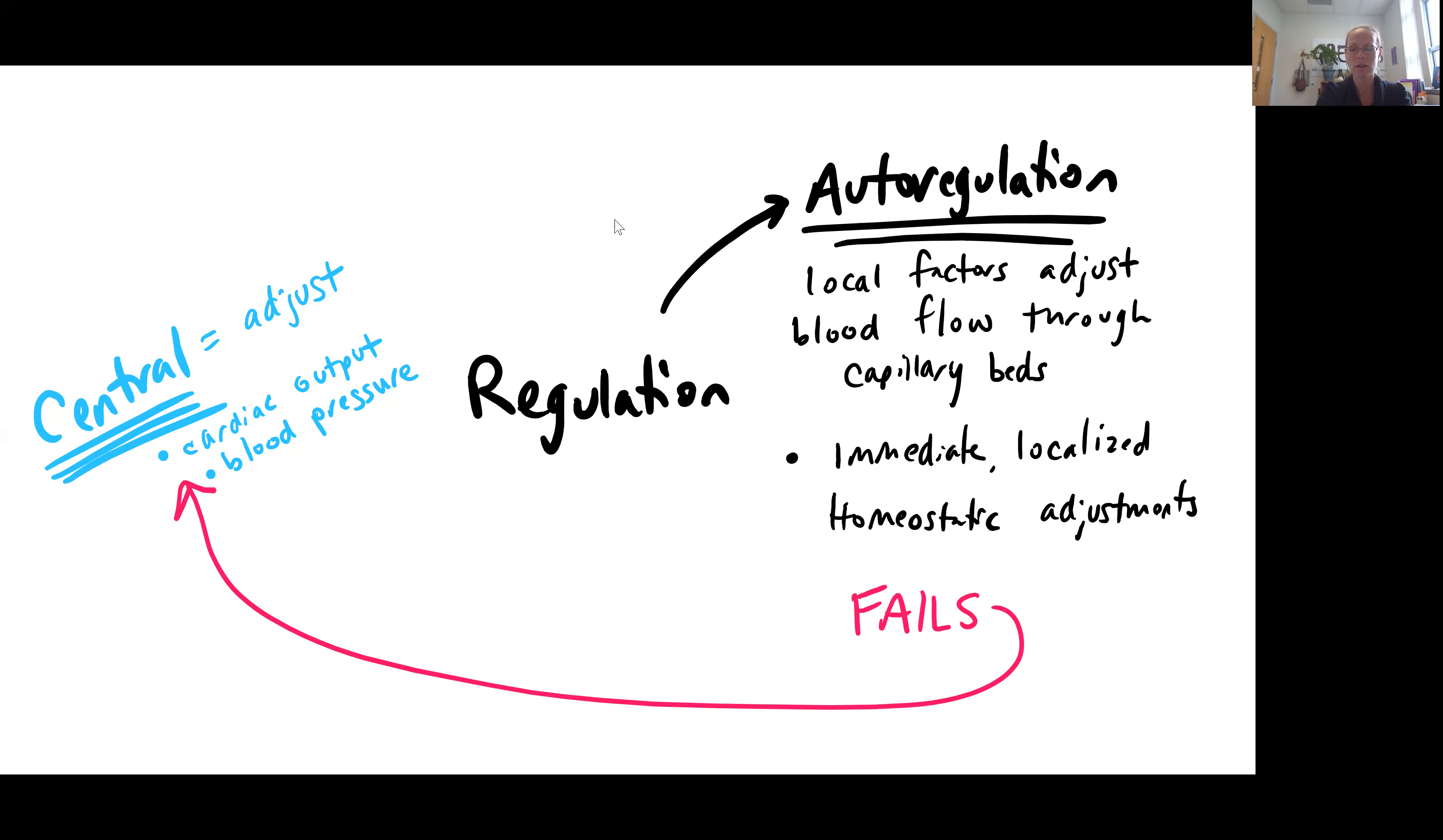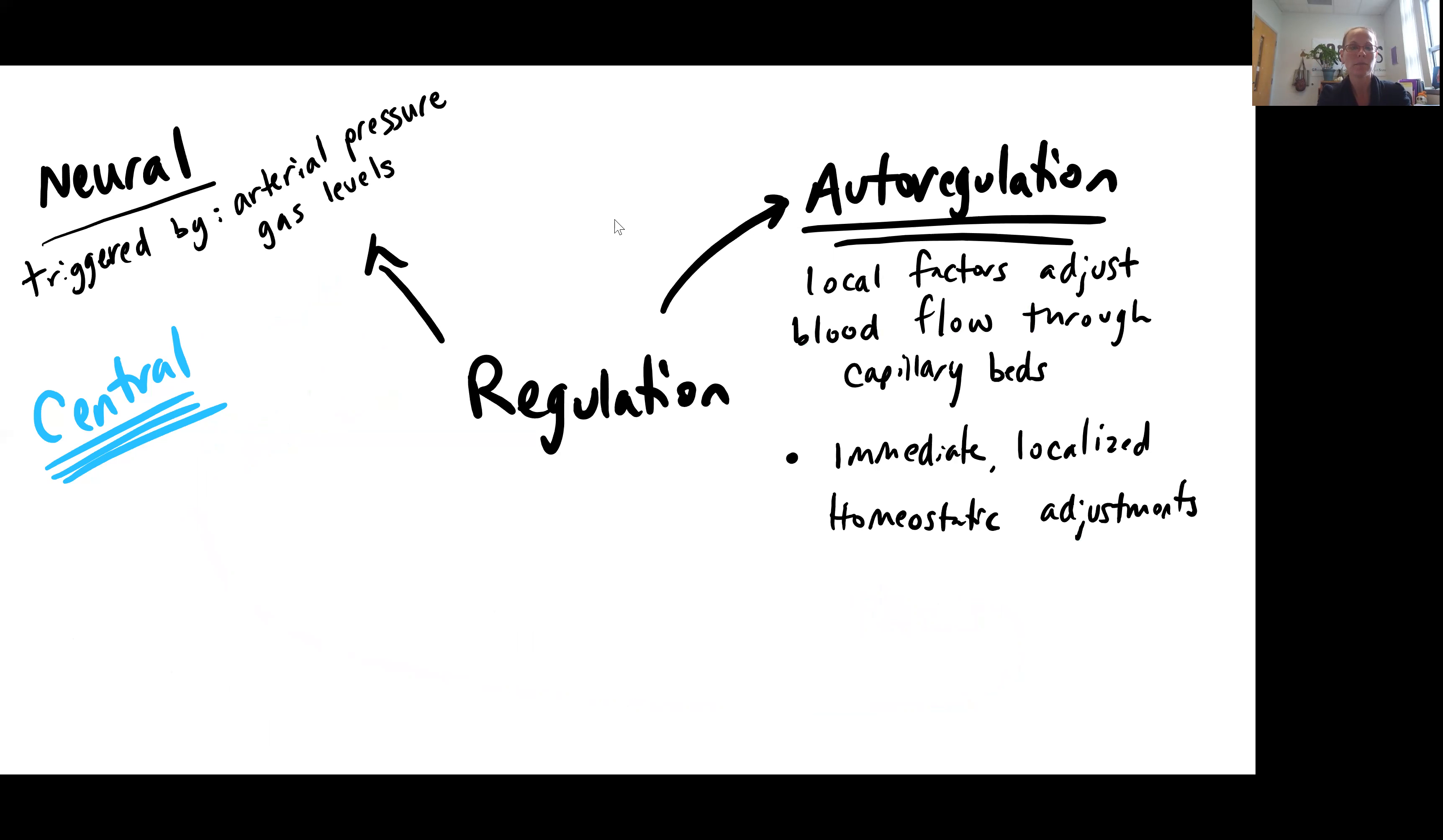In terms of our central regulation, of course, this is involving our nervous system. The nervous system is triggered by arterial pressure. So, we have special types of cells called baroreceptors that are going to be important in detecting differences in blood pressure. And then we have also what are called chemoreceptors, which are detecting differences in our gas levels. So, obviously, if we have not enough oxygen or too much carbon dioxide gas, then we're not getting adequate movement of our blood through the body.